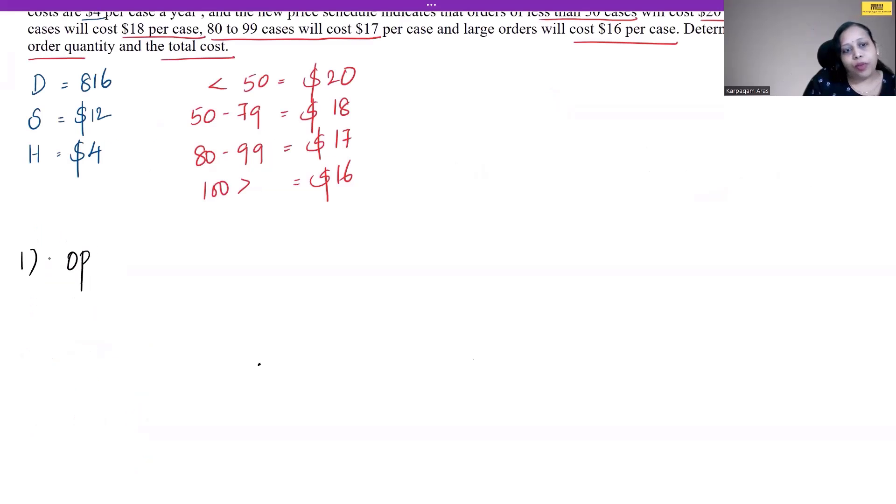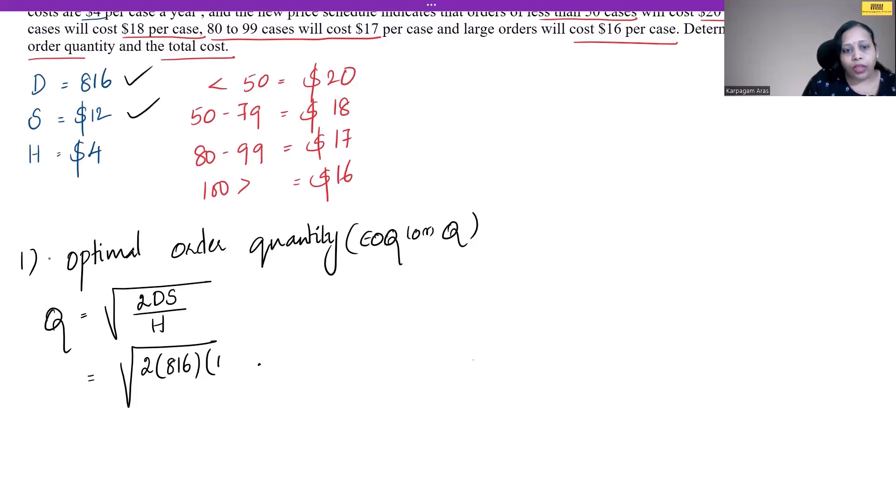First question: optimal order quantity. The formula for calculating the economic order quantity is square root of 2 times the demand multiplied by the setup cost divided by the holding cost or carrying cost. In this specific sum, we are given a demand of 816 units and setup cost of $12.